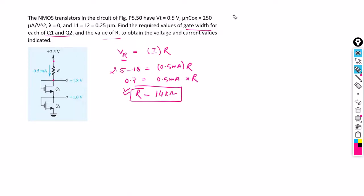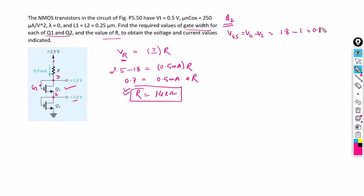Now to find out the width of Q2, first we need to find out the mode of operation of transistor Q2. This is the gate terminal, this is the source terminal, and this is the drain terminal of the transistor. We can write VGS of Q2 as gate voltage minus source voltage. The drain voltage is the same as the gate voltage since both are connected to each other. Gate voltage is 1.8V, source voltage is 1V, so VGS equals 0.8 volts.